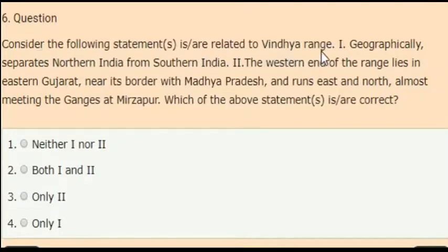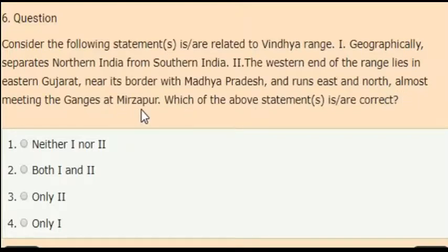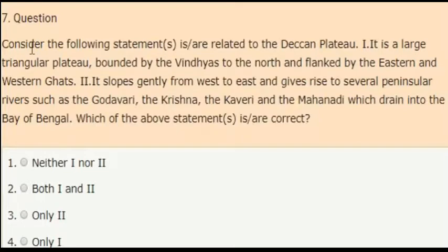Next question: consider the following statements related to the Vindhya range. First statement: it geographically separates northern India from southern India. Second statement: the western end of the range lies in eastern Gujarat near its border with Madhya Pradesh and runs east and north, almost meeting the Ganges at Mirzapur. The correct answer is both statements one and two are correct.